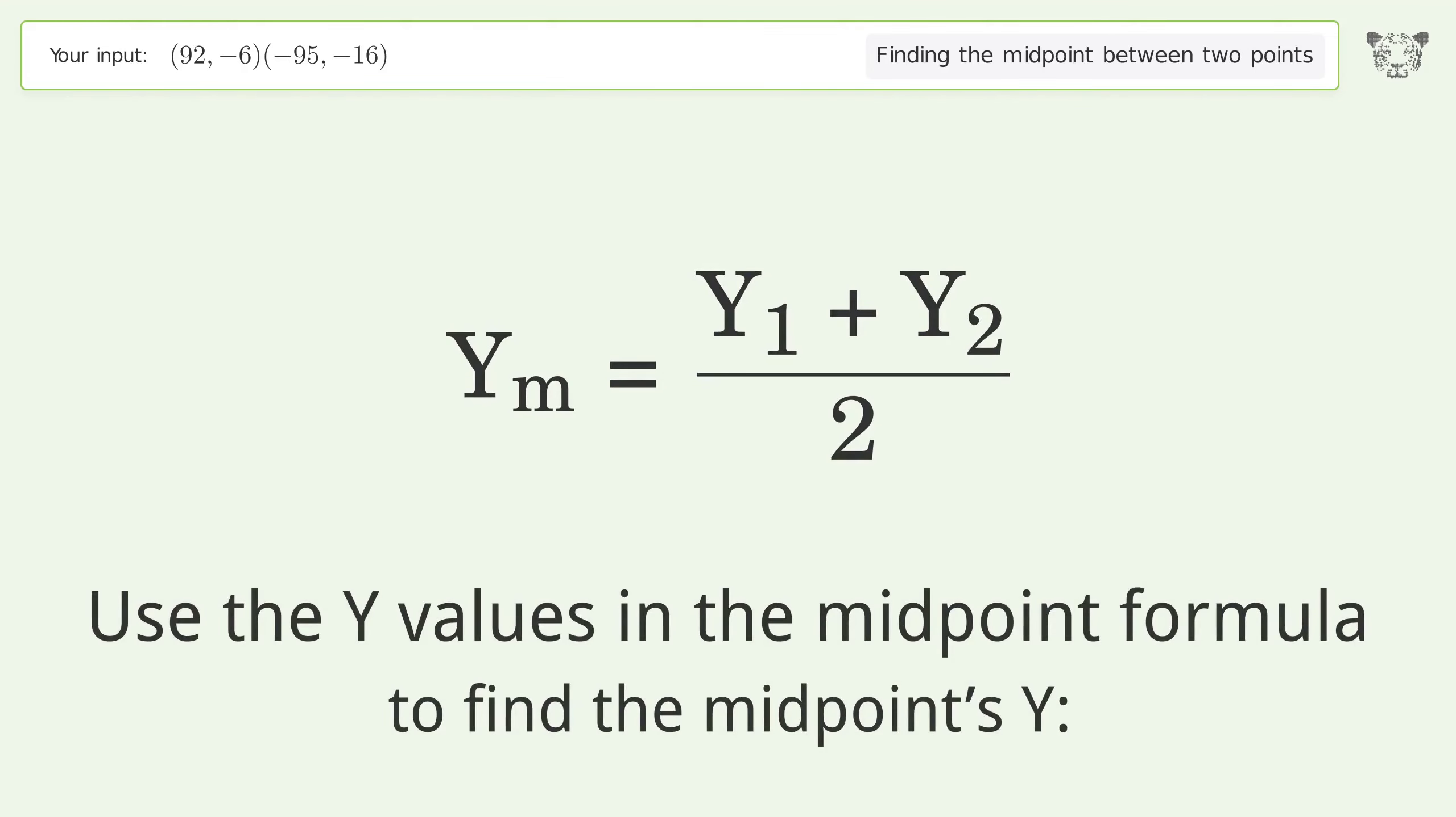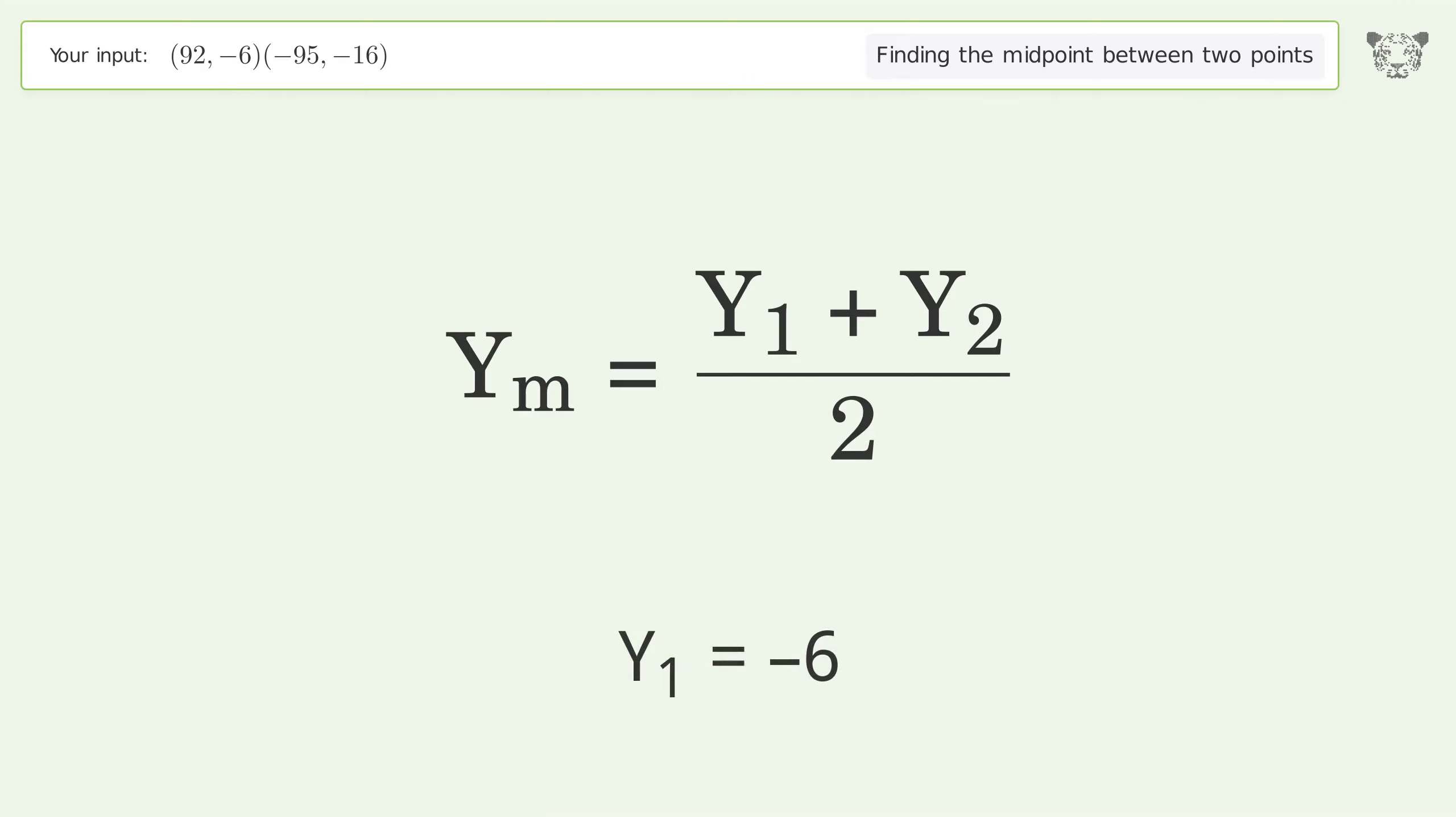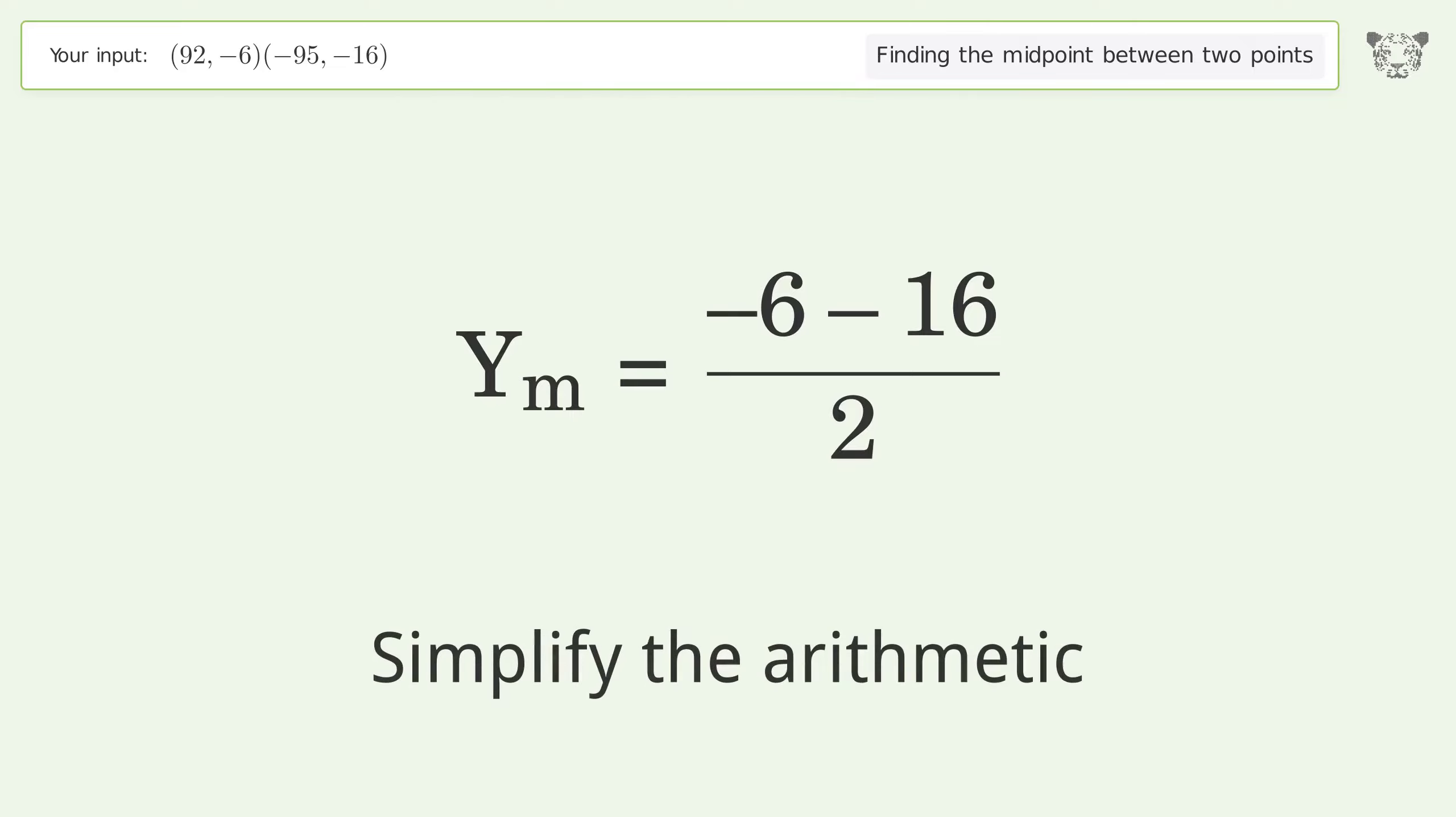Use the y values in the midpoint formula to find the midpoint's y. y1 equals negative 6, y2 equals negative 16. Simplify the arithmetic.